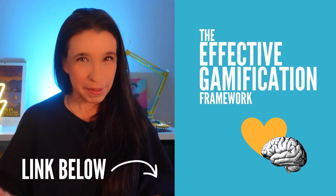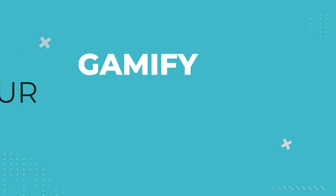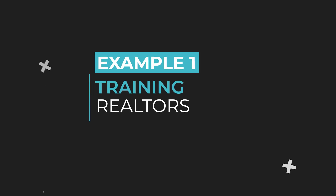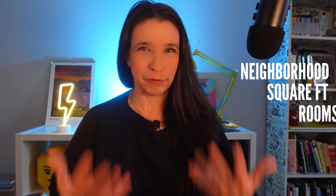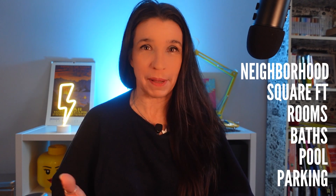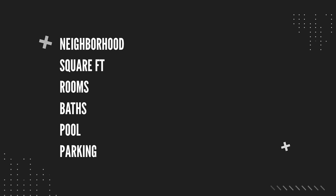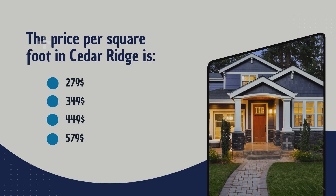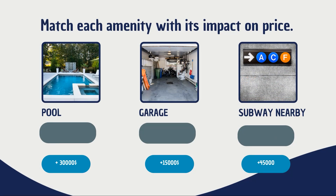Now here's how to generate unlimited scenarios on the fly. Let's say we're training junior realtors to estimate house prices. Typically we teach them about factors like neighborhood, square footage, number of rooms and baths, and amenities like pools or parking spaces. We'd show them how these things affect price and then quiz them — asking things like what's the average price per square foot in a given neighborhood, or how much does a pool add to the price, what about a garage, etc.